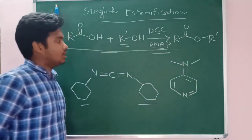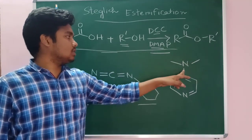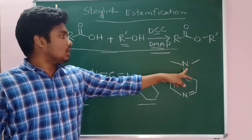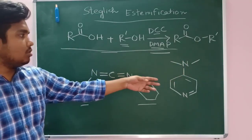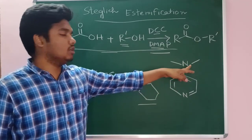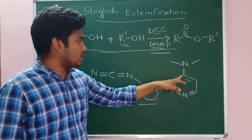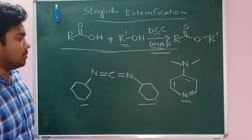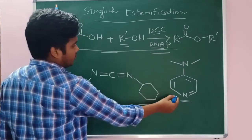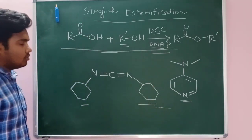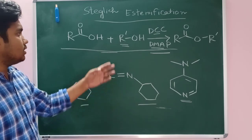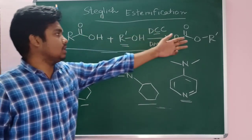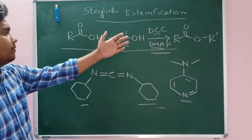And the DMAP is this aniline, dimethyl aniline kind of substrate with dimethyl amine at the fourth position. So this is called DMAP. So if we use these two reagents, then we can get our product effectively or efficiently.